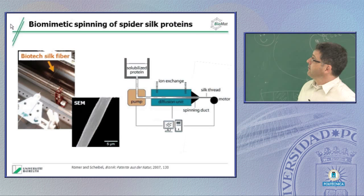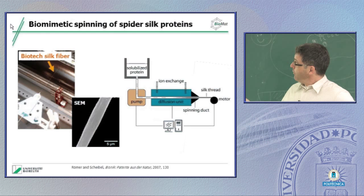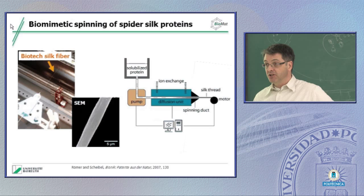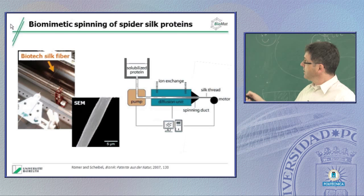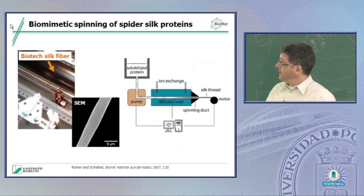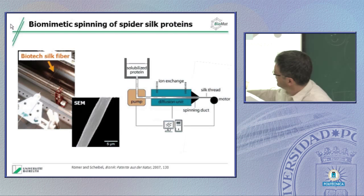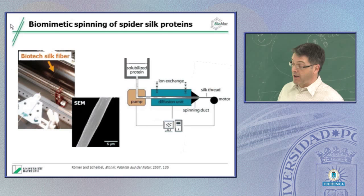This is sort of the scheme of the setup. We have solubilized protein to begin with, and we pump it into a diffusion unit that can do both ion exchange and water removal. Then we have a motor that pulls out the fiber with a defined reeling speed - here is the drum. We pull out the fiber, and you see here a scanning electron micrograph showing dimensions roughly between three and four microns - dimensions as we find in nature. So we can actually make with such a technical setup fibers.